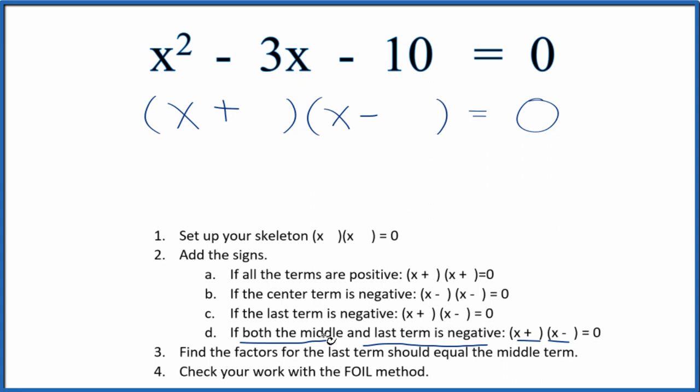At this point, we want to look at the factors for the last term, 10, and they should equal that middle term. So we're looking at factors of 10: 1 times 10, but we can't really add those together to get 3. 2 times 5, that would work. So if we had a negative 5 and then the positive 2, that might give us that negative 3 in the center.